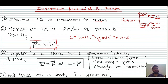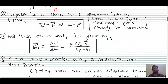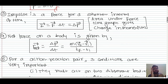Impulse is the force acting on a body for a shorter interval of time. For example, if you punch a wall and quickly pull back, the force acting on that area for that short interval is impulse. It is represented as Ī = F̄ × Δt, which equals the change in momentum. The SI unit of impulse is the same as that of momentum.